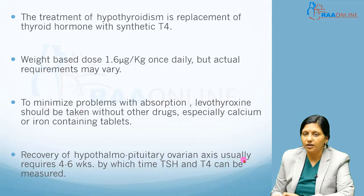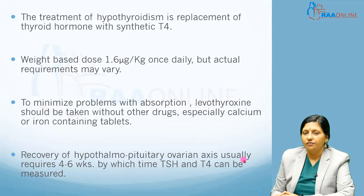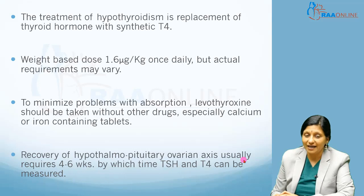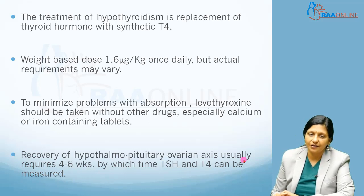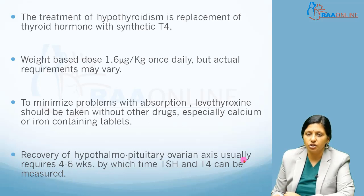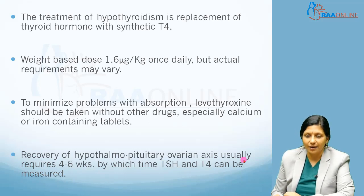The treatment of hypothyroidism is replacement of thyroid hormone with synthetic T4. The weight-based dose is 1.6 micrograms per kg once daily, but actual requirements may vary based on the patient's response. To minimize absorption problems, levothyroxine should be taken without other drugs, especially calcium or iron-containing drugs. Recovery of the hypothalamic-pituitary-thyroid axis usually requires four to six weeks, after which TSH and T4 can be measured.